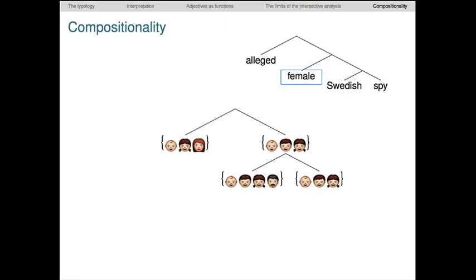Next we can treat female as intersective as well. Thus we can use the intersective rule again. The meaning of female is intersected with the meaning we just calculated. And the result is the set of entities that are female and Swedish and spies.